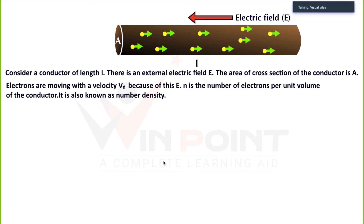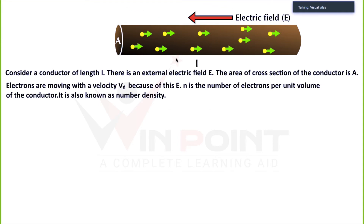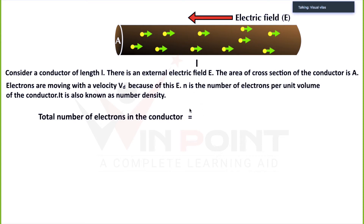Now we are going to find the volume of this conductor. The area of cross section is A and the length is L, so the volume is A into L. The total number of electrons in this volume will be N times A times L, since N is the number density — the number of electrons per unit volume.